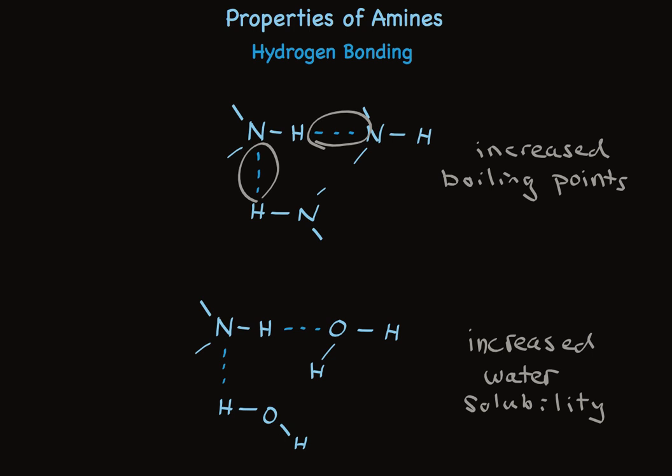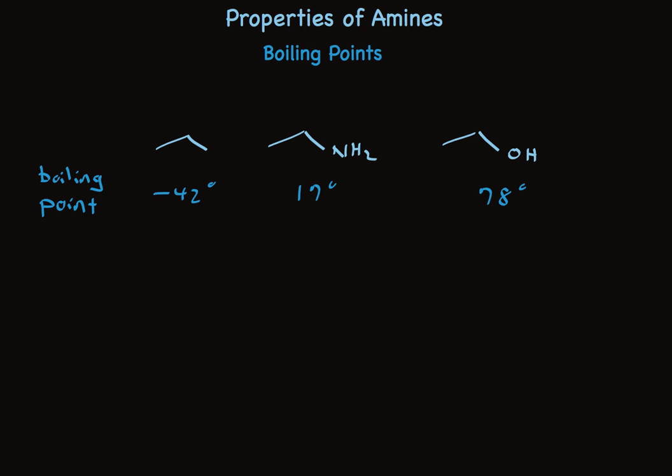Look at these data — the boiling points of three compounds with almost the same molar mass: propane, ethylamine, and ethanol. For propane, no hydrogen bonding is possible and it boils at a very low temperature. Ethylamine is a primary amine with substantial hydrogen bonding, so it boils much higher. But ethanol, which has even stronger hydrogen bonding, boils at 78°C compared to ethylamine's 17°C.